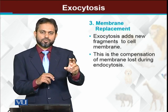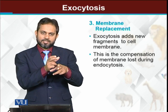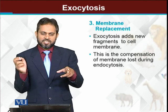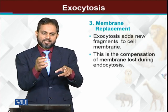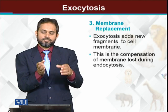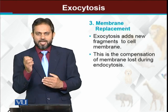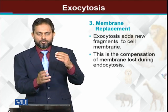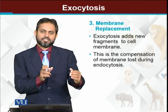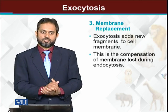Exocytosis compensates for this by carrying membrane material from inside the cell outward to the cell membrane. In exocytosis, membrane vesicles fuse with the cell membrane, so with each vesicle that merges, it becomes part of the cell membrane. Through endocytosis, cell membrane is continuously being cut away, while through exocytosis, membrane particles are added back, increasing the surface area of the cell membrane and compensating for the loss caused by endocytosis.